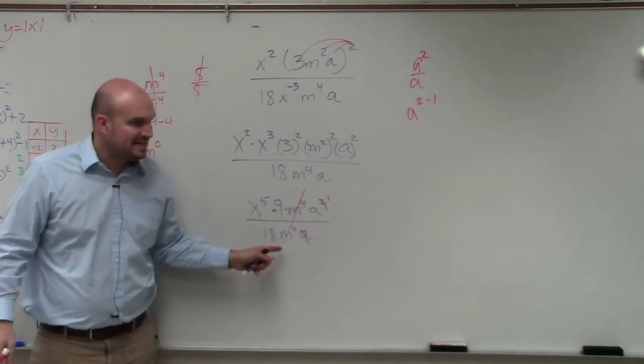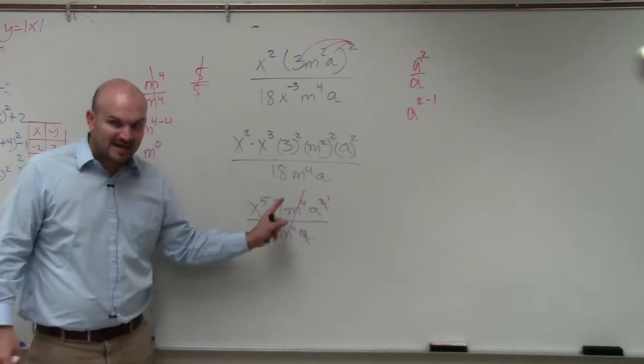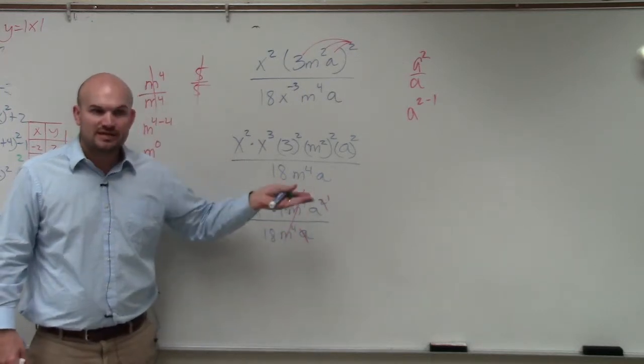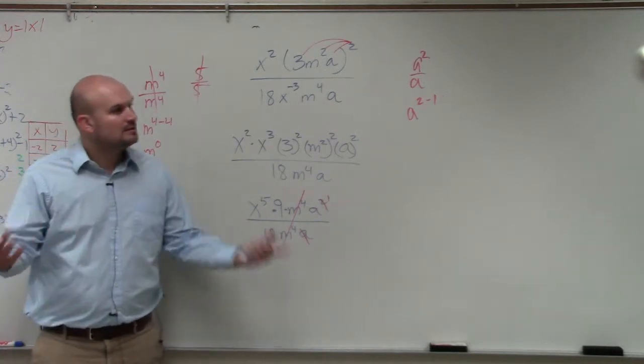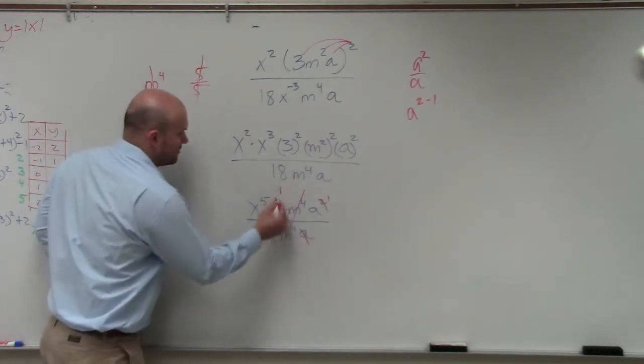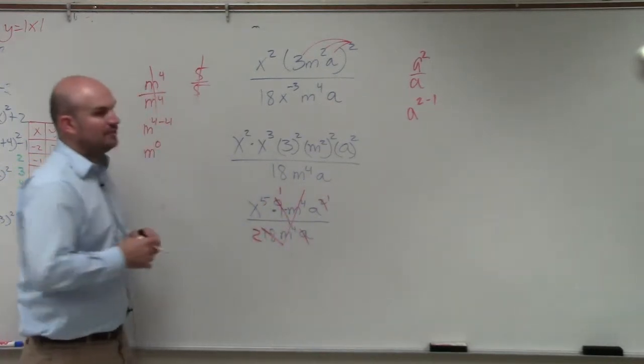9 over 18. 18 does not divide into 18. So you have to reduce it. What number divides both into 9 and into 18? 9, and it goes in there. That reduces to 1 half.